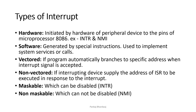The types of interrupts specific to 8086 are hardware and software. Hardware interrupts are initiated by peripheral devices via the pins of the microprocessor. In 8086, two pins are dedicated for this: INTR and NMI (non-maskable interrupt). Only two hardware interrupts can be generated because only two pins are dedicated. Software interrupts are instructions given by the programmer and are used to implement system services, call, or return functions.